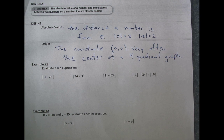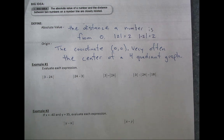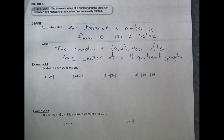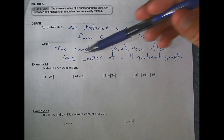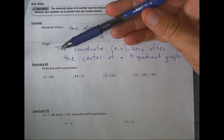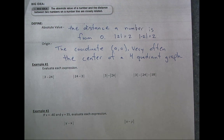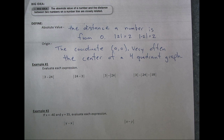When we start trying to find the distance between two numbers, we're going to take this into account. One other word we're going to use a lot in this unit is origin — that should not be a new word. That's the coordinate (0, 0). Very often that's the center of a four-quadrant graph, and we call that the origin.